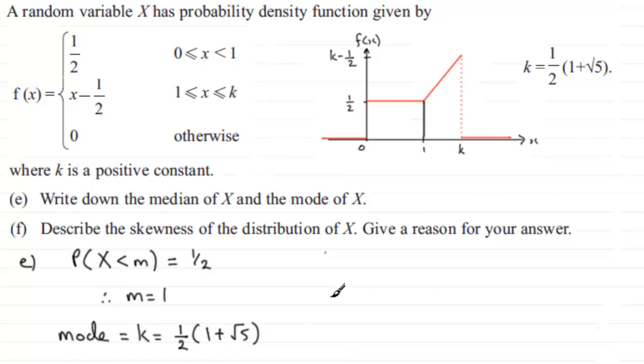Now in the last part then, part F, we've got to describe the skewness of the distribution of X. Is it positive skew or negative skew? Well the answer is, it's negative skew. And I know that because they've got us to work out the median and the mode. And the median is a value which is less than the mode. And when you have this situation it gives us negative skew.